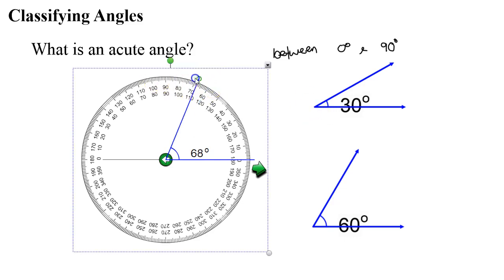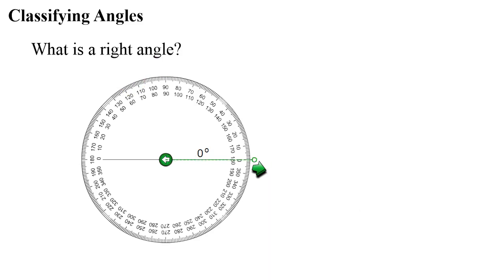So what happens when we reach the 90 degree mark? Well, that brings us to our next angle which is called a right angle. Basically, a right angle is an angle that is exactly 90 degrees.